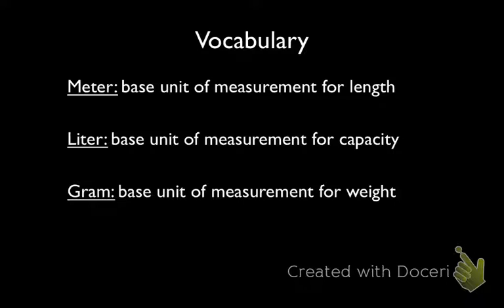So first, the vocabulary. In the metric system, unlike in the customary system, meters, liters, and grams are what are being used for measurement. Meter is the base unit of measurement for length. Liter is the base unit of measurement for capacity. And gram is the base unit of measurement for weight.